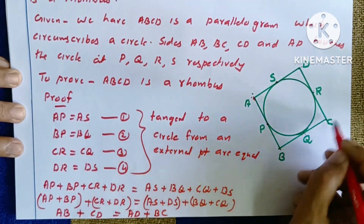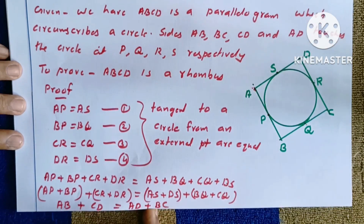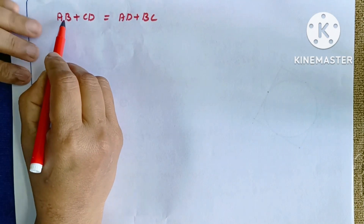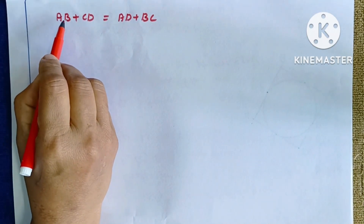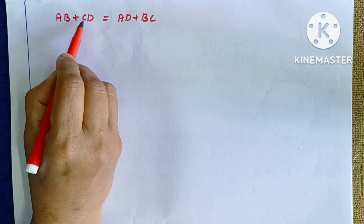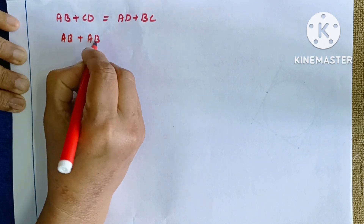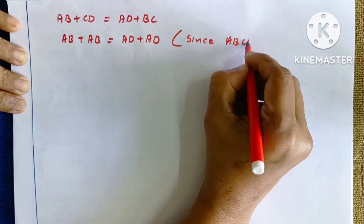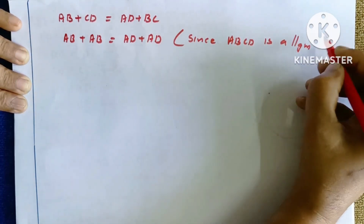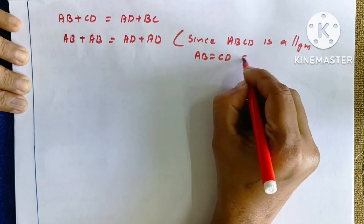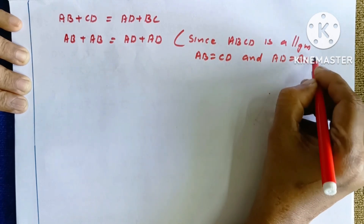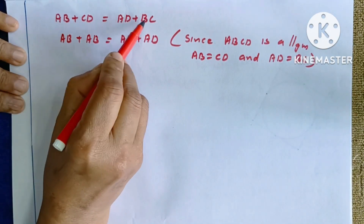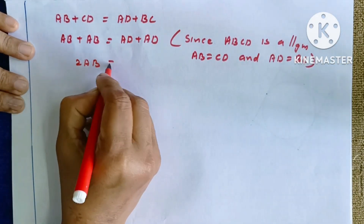This gives AB plus CD equals AD plus BC. Since ABCD is a parallelogram, opposite sides are equal: AB equals CD and AD equals BC. Substituting: 2AB equals 2AD, so AB equals AD.